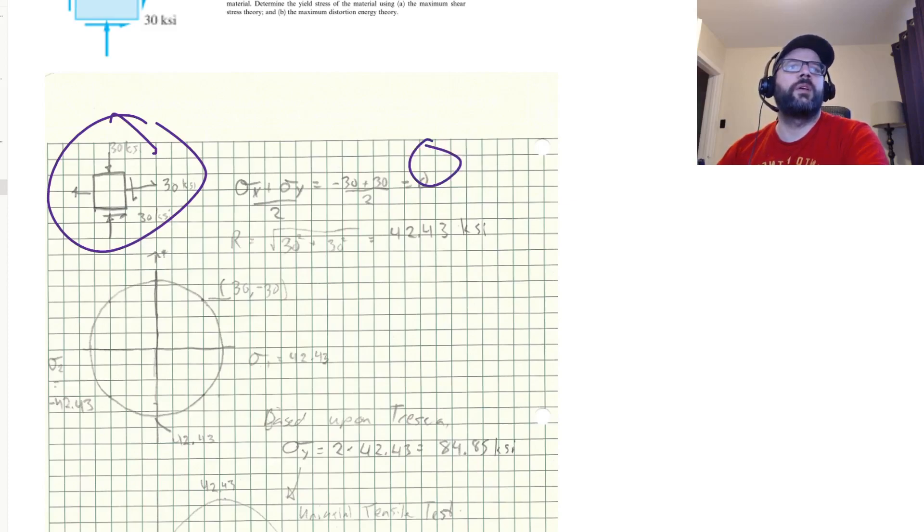Radius, that's going to be based upon what's on this face here. So we've got 30, again, technically speaking, that one's 30 minus 0 squared. But anyways, so 30 squared plus 30 squared gives us 42.43 KSI.